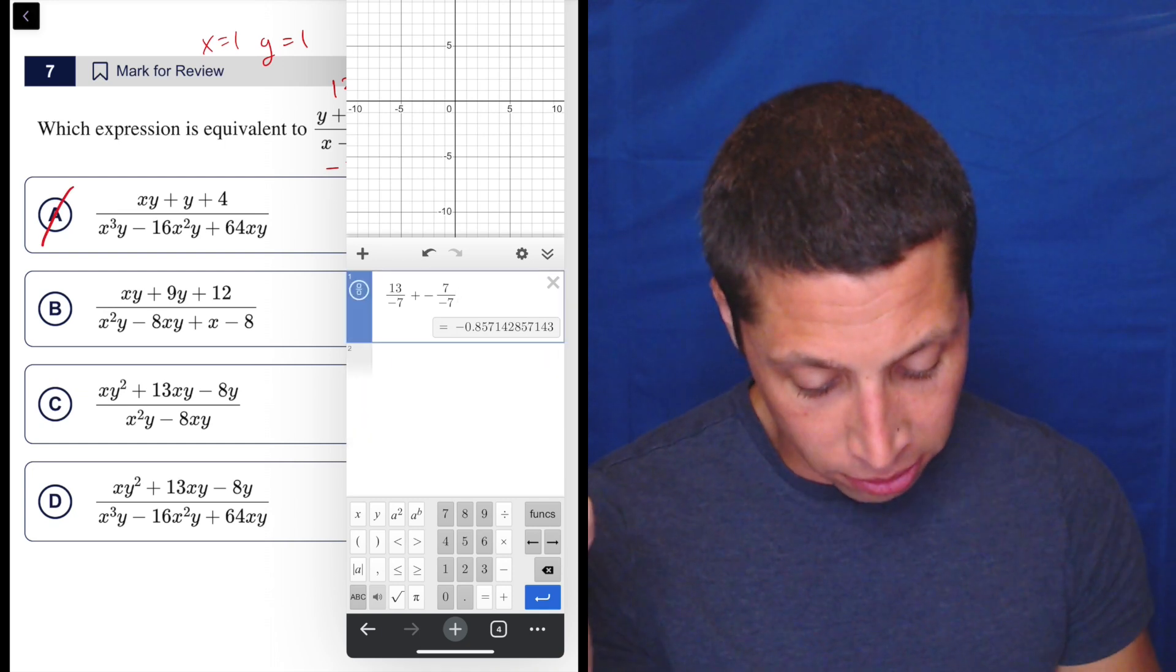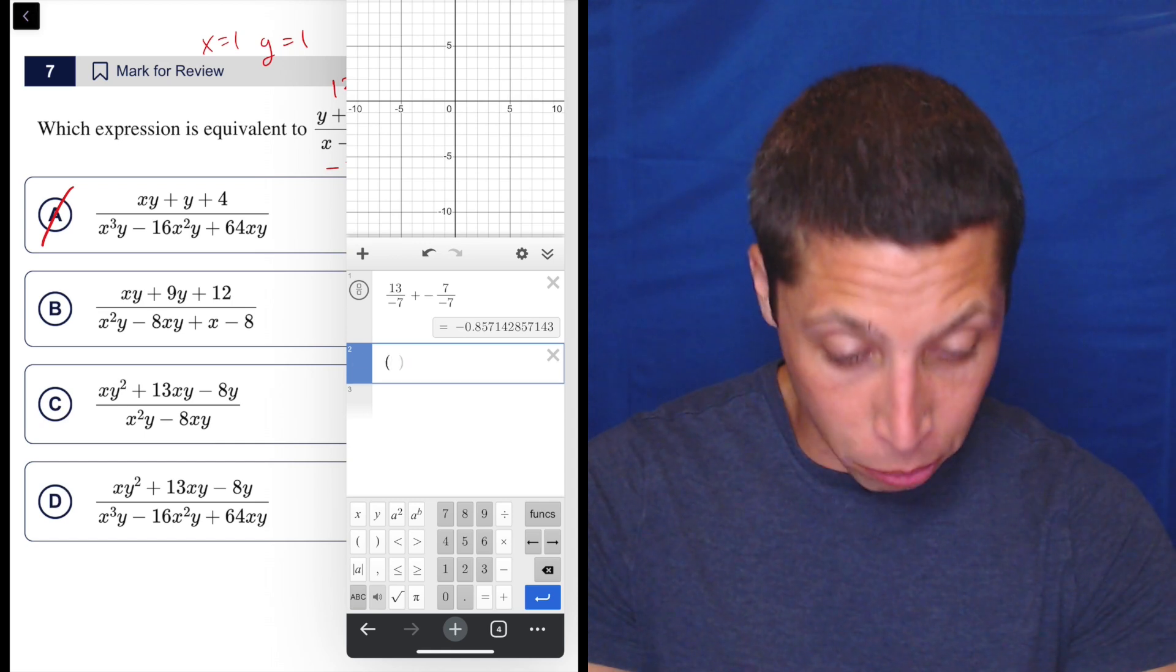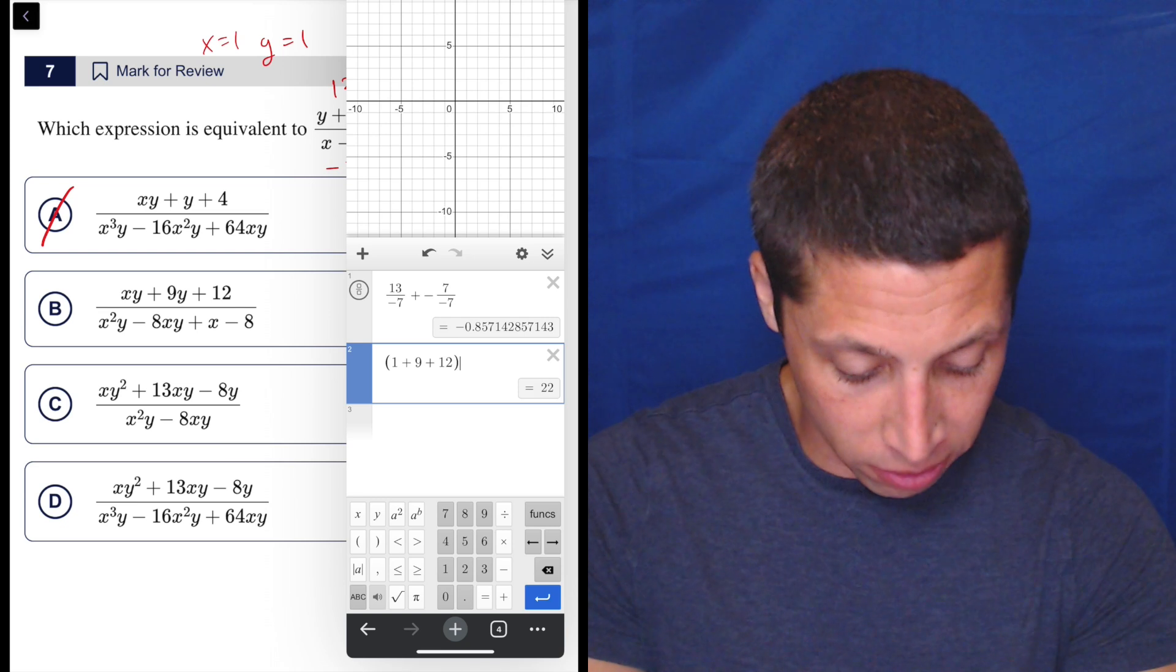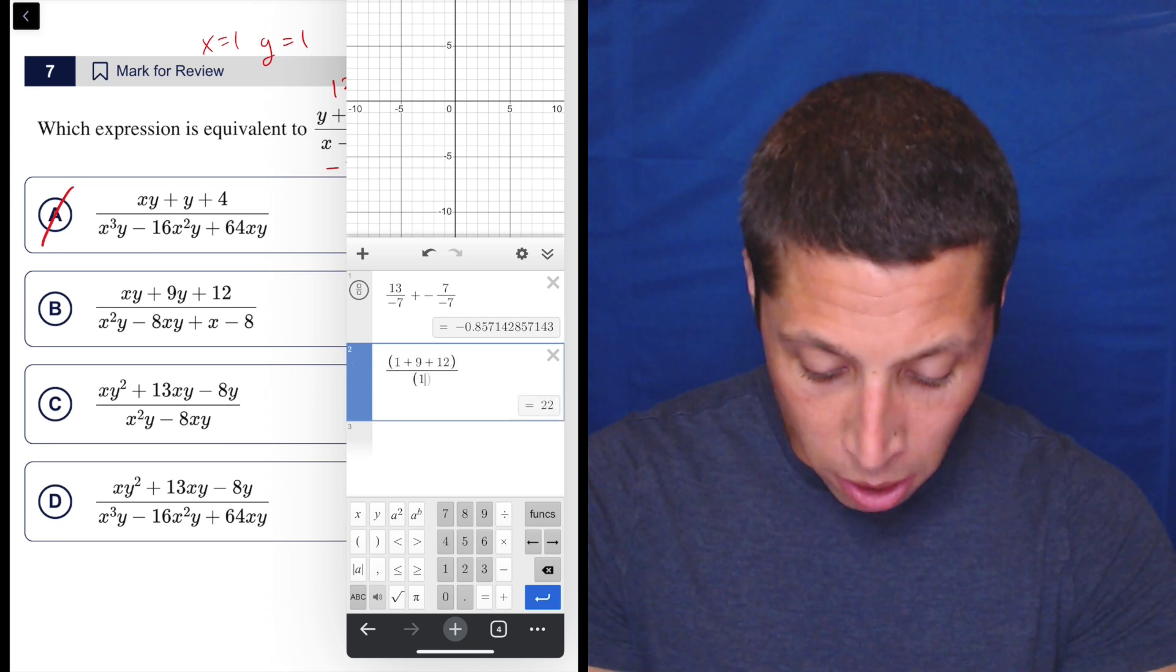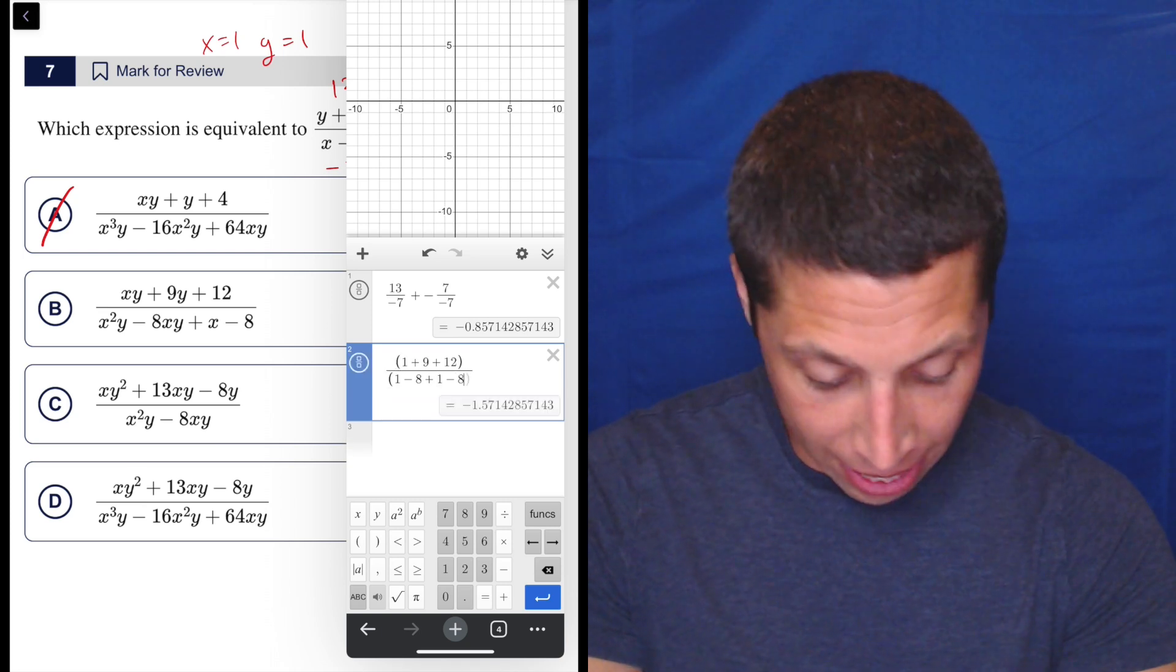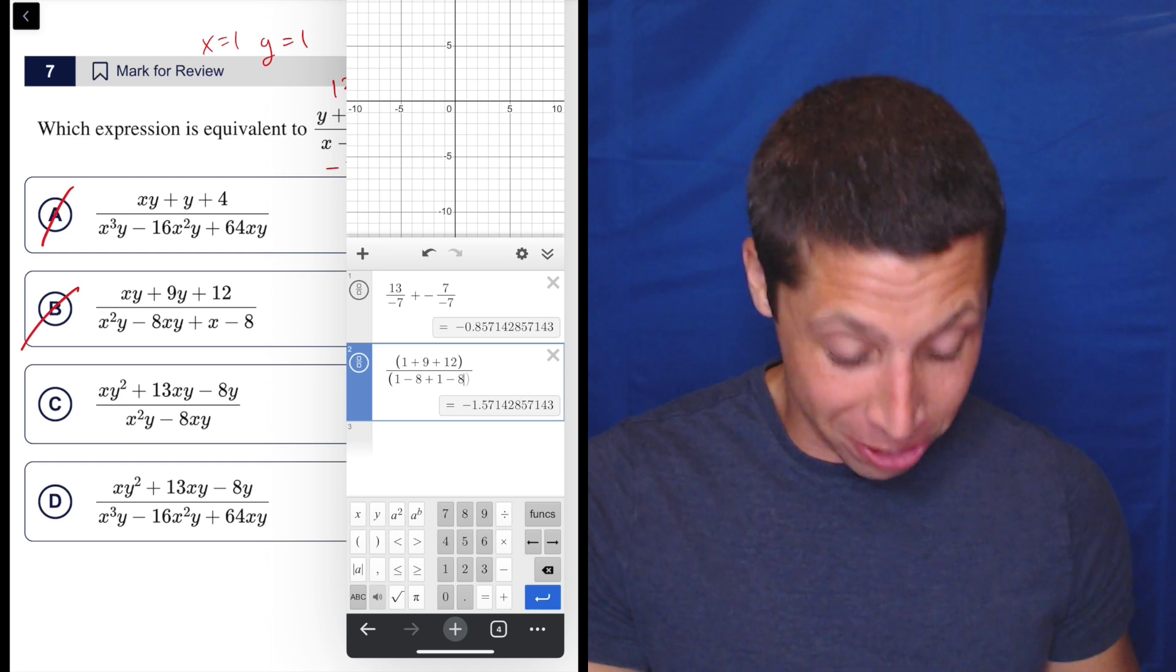So let's get rid of that choice and let's try another one. So now choice B. I'm putting in parentheses so that I don't have to deal with the annoying fraction, but one plus nine plus 12 is the top, divided by, again, one minus eight plus one minus eight. Another messy number, but it's not the messy number I want. So that's probably wrong too.